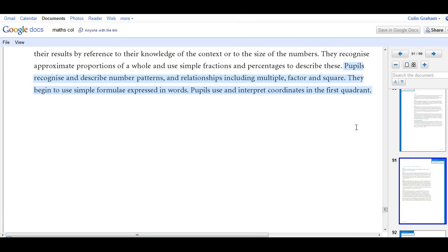So at level 4, which should be around about 10 or 11 years old, pupils recognise and describe number patterns and relationships including multiple factors and squares, they begin to use simple formulae expressed in words. Pupils use and interpret coordinates in the first quadrant and wouldn't it be great if they could do all of this in one package?